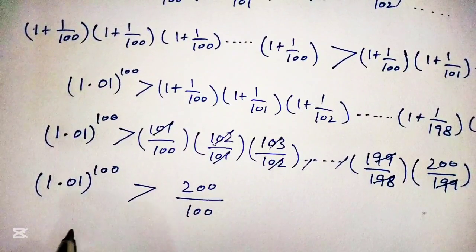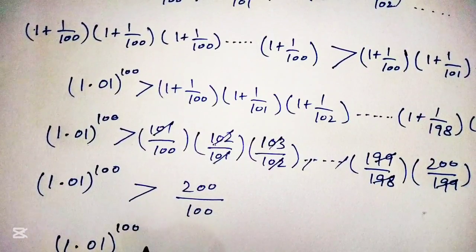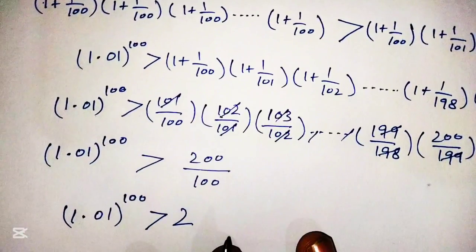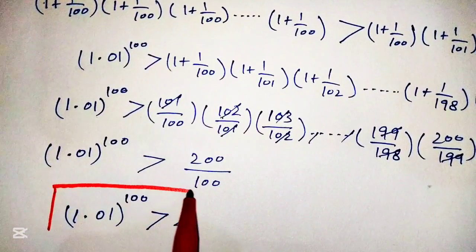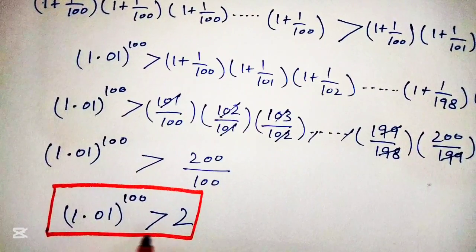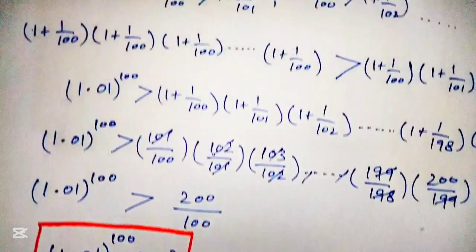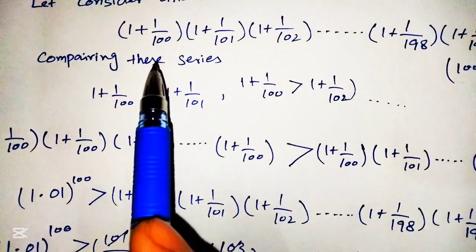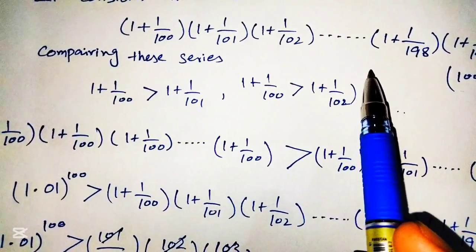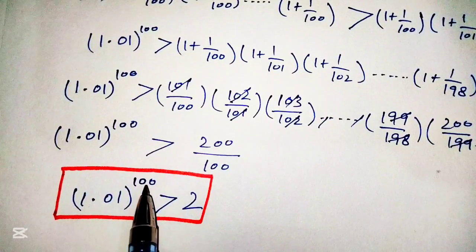We can simplify this as: 1.01 raised to the power 100 is greater than 2, which is our required result. The comparison series we introduced is actually equal to 2, and since 1.01^100 is greater than that series, we have proved that 1.01 raised to the power 100 is greater than 2.